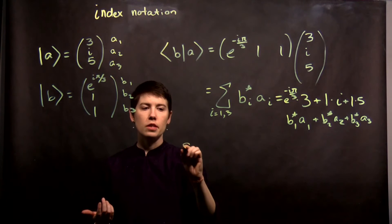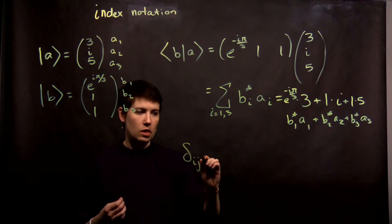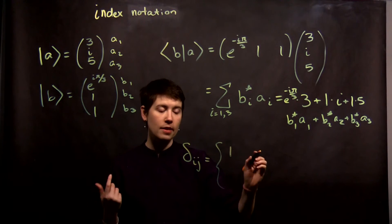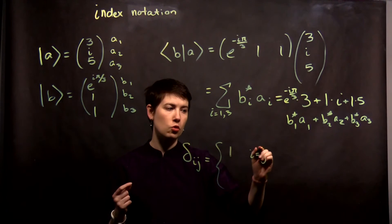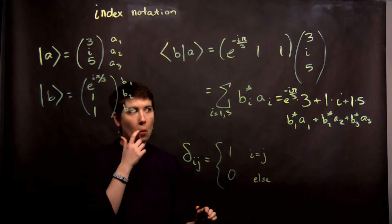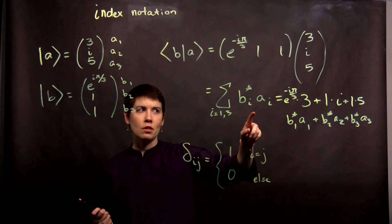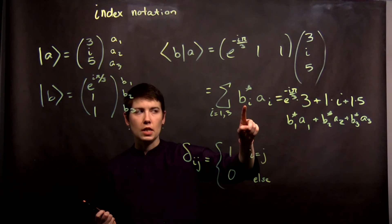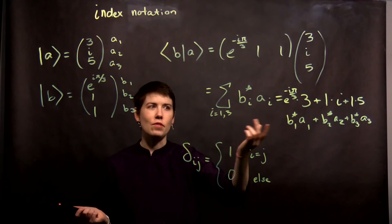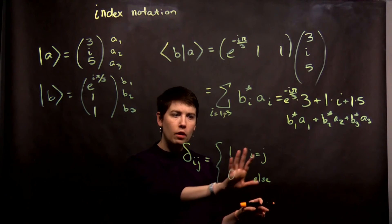So another place that this comes up is the delta function. And you'll often see it written like this. And what this means is that this is equal to 1 if i is equal to j and it's equal to 0 otherwise. And so you can actually think of this as, for instance, here saying that this is like bj times ai times the delta function. But that does just simplify to saying the i values have to be the same.